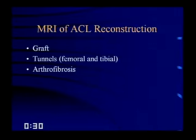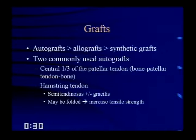For MRI of ACL reconstruction, there are three things to discuss: the graft itself, the tunnels, and arthrofibrosis. Grafts are most commonly autografts. Two commonly used types: the central one-third of the patellar tendon with a bone plug on each end — the bone-patellar tendon-bone graft — and hamstring tendons (semitendinosus with or without gracilis), often folded and looped around each other to increase tensile strength. You want to see a nice, normal, homogeneous graft.